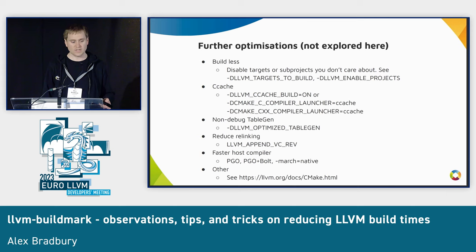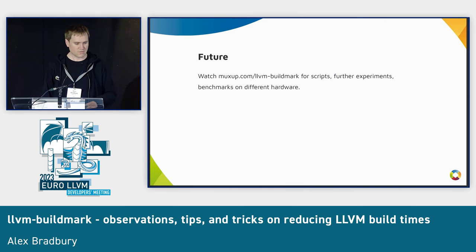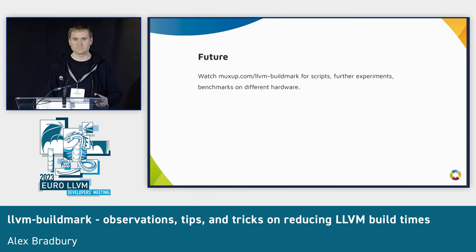There are settings that can help with that, like LLVM-optimized TableGen. The warning there is that it's very easy to write incorrect TableGen, because most of the checking doesn't occur in the release build, so it's easy to miss that if you're building with it. There are a number of other things to look into. Thank you very much — I'll be posting a series of blog posts soon that go into more detail and also look at stats across different build machines.